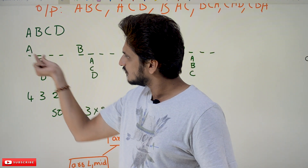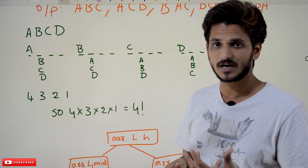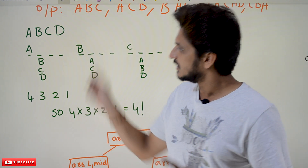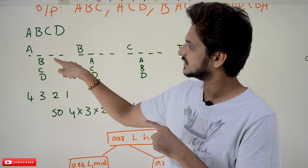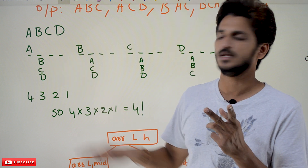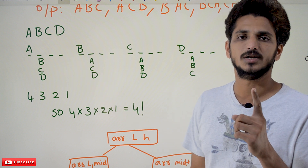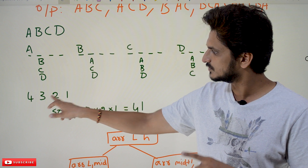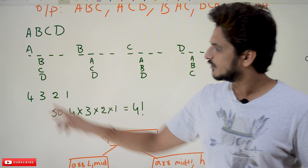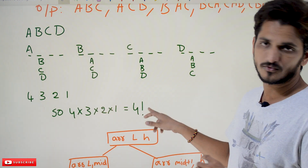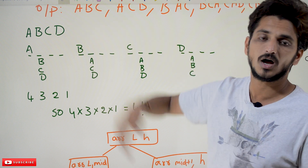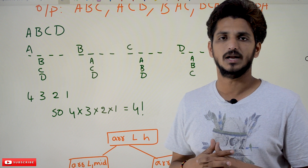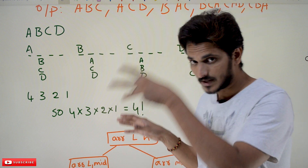If you place A in the first position, how many possibilities are there in the second position? You can place B, C, or D — three possibilities. If you place B in the second position, two possibilities in the third position. Similarly, one possibility in the next position. This is what permutations means. Four multiplied by three multiplied by two multiplied by one — that is equal to four factorial. How many different permutations are available? Four factorial permutations are available. This is the basic concept from permutations and combinations.